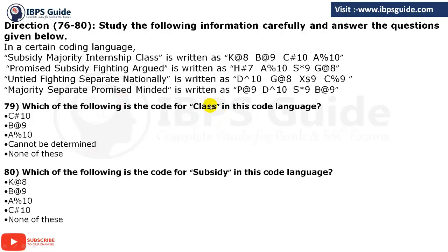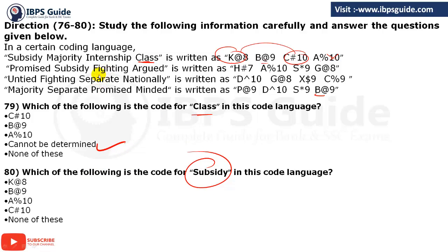Q79: Find the code for 'class'. Class appears only in the first sentence. The possible codes are K at-the-rate 8 and C hash 10 — two possible answers. Since no option says 'either of these two', we cannot determine the answer. Q80: Find the code for 'subsidy'. Subsidy appears in the first and second sentences. The code common to both is A percentage 10. So the answer is A percentage 10.